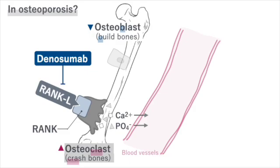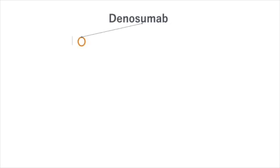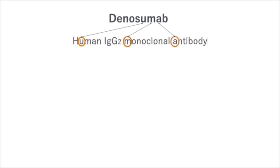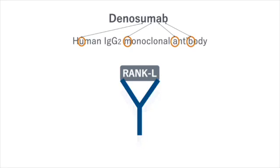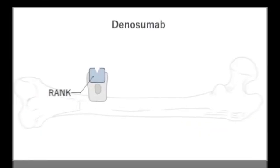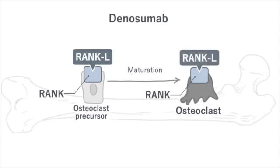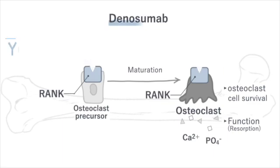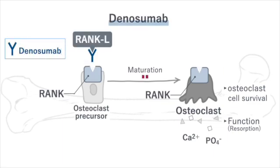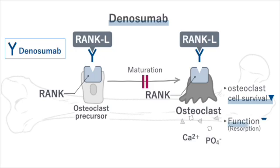Denosumab inhibits osteoclast activation by blocking the RANK–RANK-ligand interaction. As the name suggests, denosumab is a fully human IgG2 monoclonal antibody that binds to RANK-ligand. The binding of RANK-ligand to its receptor RANK triggers osteoclast precursors to differentiate into osteoclasts. RANK-ligand plays a key role in osteoclast function and cell survival. By inhibiting RANK-ligand, denosumab prevents the maturation, function, and survival of osteoclasts, thereby reducing bone resorption.